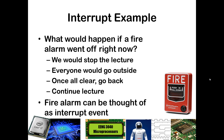As an example of an interrupt, suppose we were watching this lecture in an actual lecture hall on campus. What would happen if the fire alarm went off right at this moment? Hopefully you wouldn't just stay in front of your computer. You would actually want to get outside. So we would stop the lecture wherever we were, everyone would go outside, and once we got the all clear and somebody had told us the building was safe, we would go back inside and continue the lecture where we left off. We would continue where we were — not restart at the beginning. So the fire alarm can be thought of as an interruptible event.